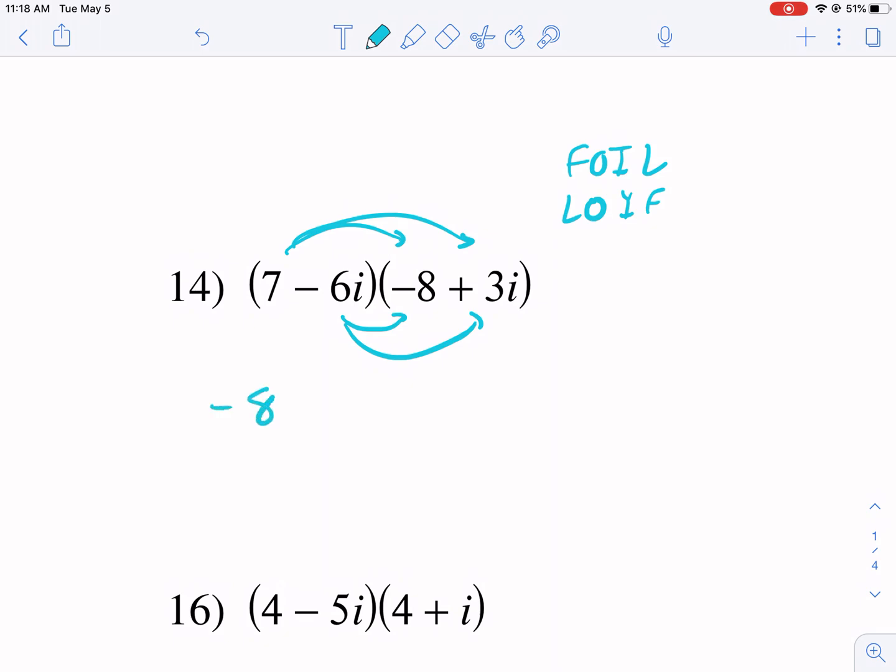So you have 7 times -8. That gives us -56. 7 times 3 is 21i. Then we have -6i times -8. This gives us positive 48i, and then we have -18i squared.